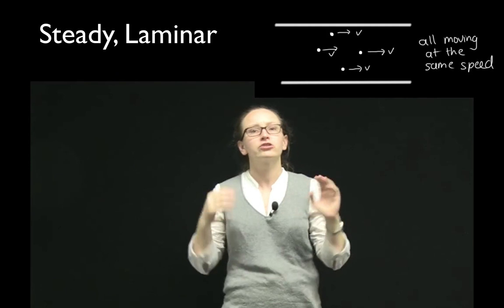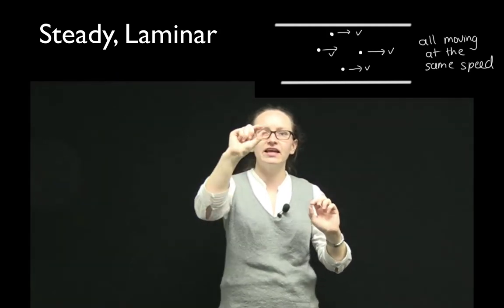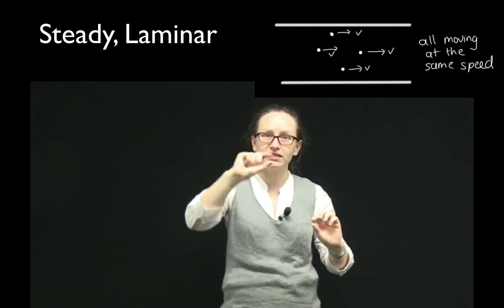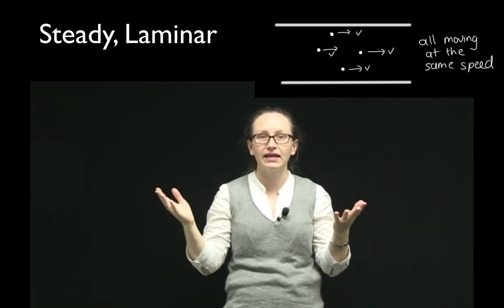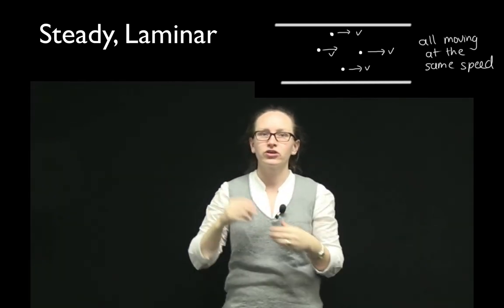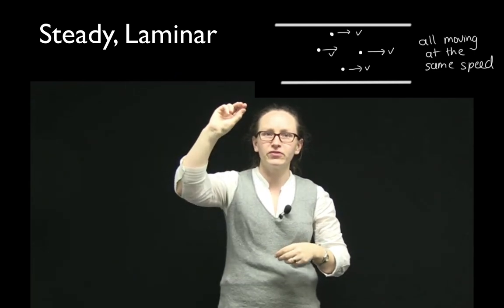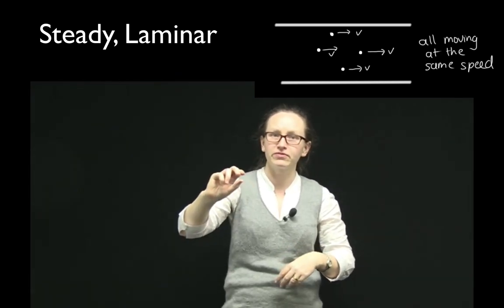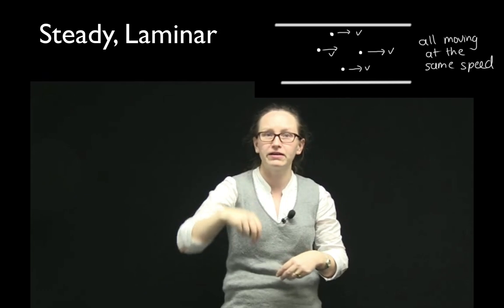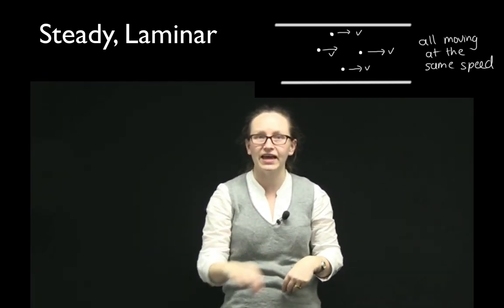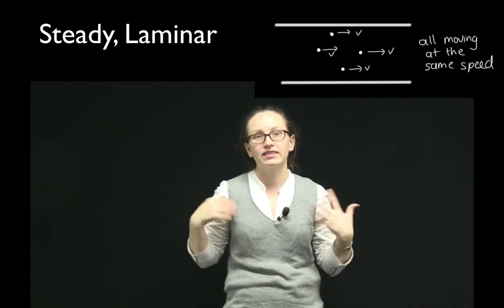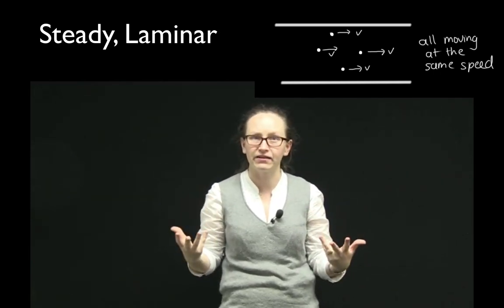So ideal fluid flow is the flow of fluids which is steady or laminar. A steady flow means that each of the little increments through that flow is moving with the same speed or velocity. So it doesn't matter if you're at the top of the fluid or the bottom of the fluid or where you are in the river. If it's ideal fluid flow, you've got the same speed at each of those points. And this is also called laminar flow.